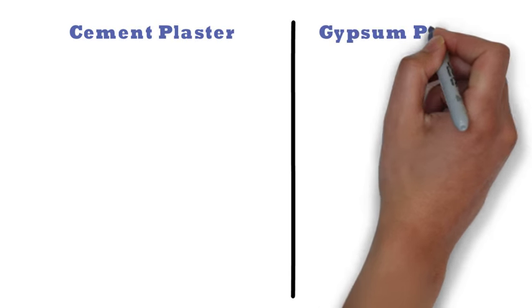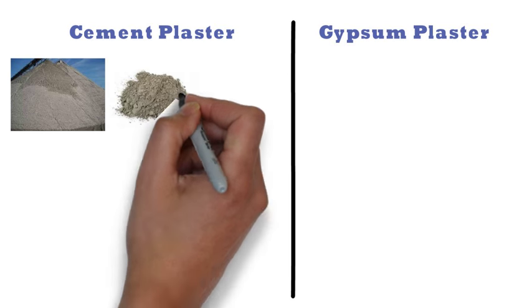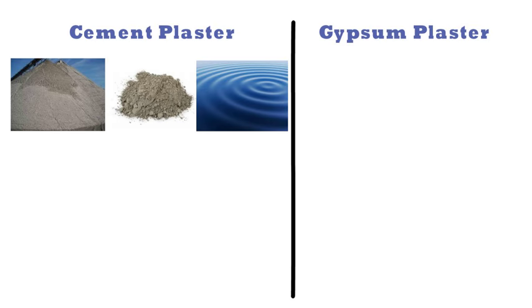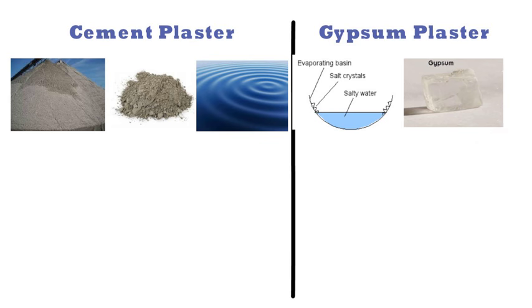In this video I will tell you about the difference between cement plaster and gypsum plaster. Cement plaster is made up of sand, Portland cement and water. In case of gypsum plaster, instead of Portland cement, gypsum is used and it doesn't need sand. Gypsum is a lightweight material which is formed as a result of evaporating seawater in massive prehistoric basins.